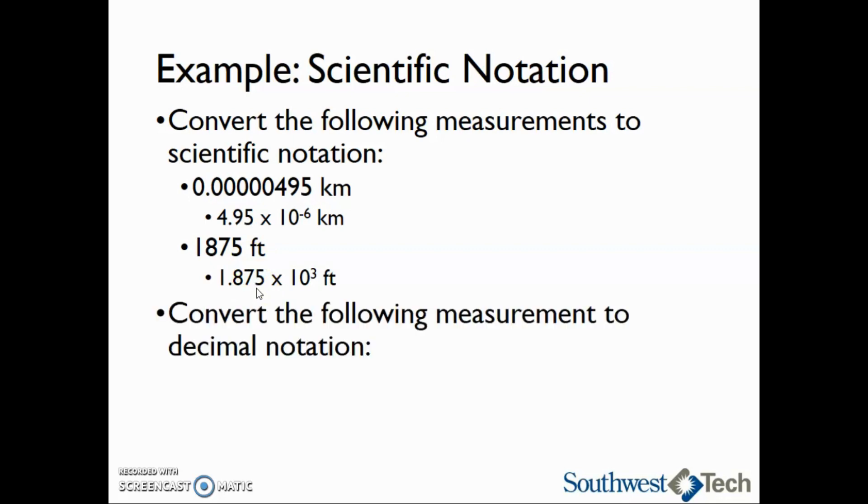Now we're going to convert the other way, from scientific notation to decimal notation. If I have a number of 2.922 × 10^4 kilograms, this is scientific notation. If I want standard notation, I move the decimal point four places, the exponent number of places, to the right in this case because our exponent is positive. So this becomes 29,220 kilograms.